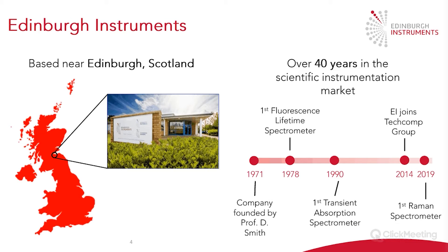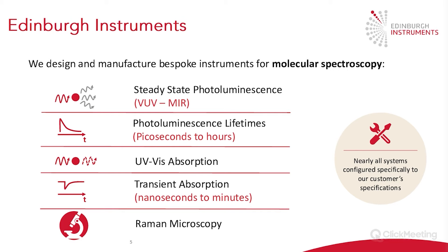We're based in Scotland, near Edinburgh, and we have over 40 years in the scientific instrumentation market. We were founded in 1971, and last year we started to launch our Raman spectrometers, of which we now offer two. We also have instruments for steady state photoluminescence, photoluminescence lifetimes, UV absorption, transient absorption, and Raman microscopy. Almost all of our instruments go out the door specially configured to the customer's needs, making our instruments highly flexible to fit around your sample type.